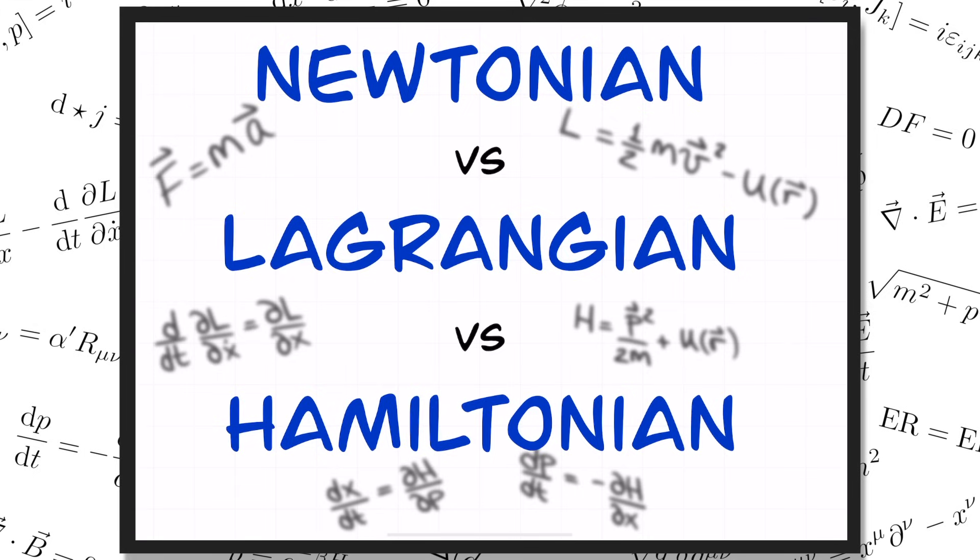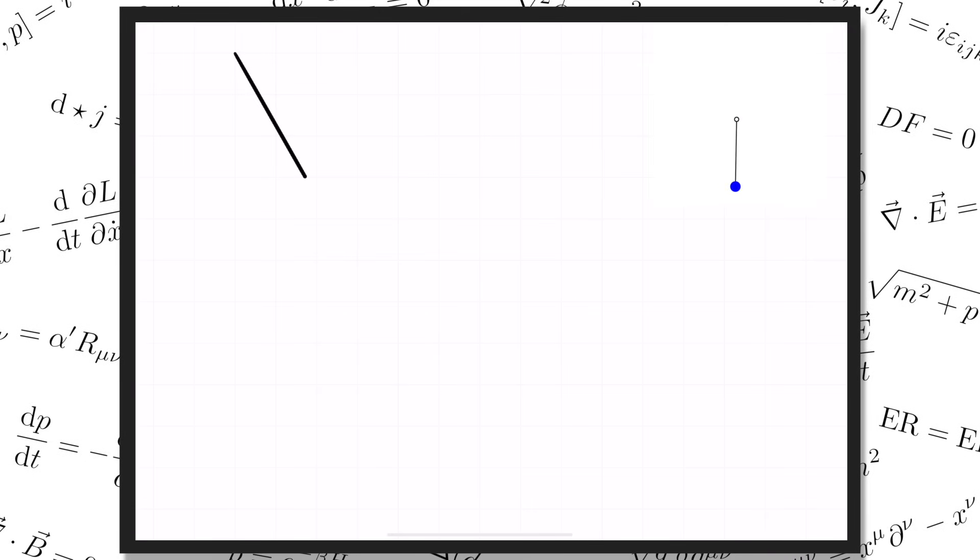These are the Lagrangian and Hamiltonian formalisms of mechanics, and in this video I'm going to teach you the basics of both. I'm going to illustrate each approach using the simple pendulum as an example. So we've got a particle of mass m hanging from a lightweight rod of length l, which is attached to a pivot at its other end. Now I'll assume that you've already learned how to analyze a pendulum using F equals ma, so I'm only going to review that briefly right now before I get into the Lagrangian and Hamiltonian approaches.